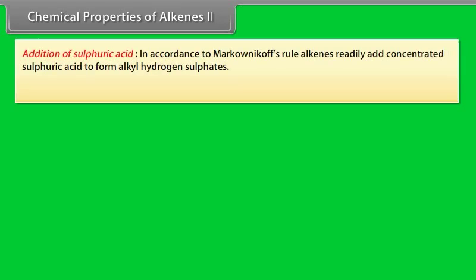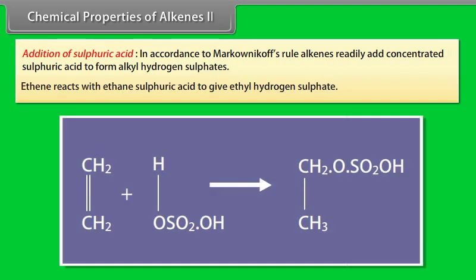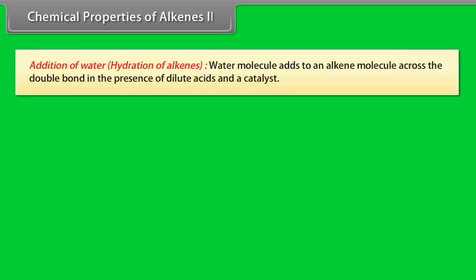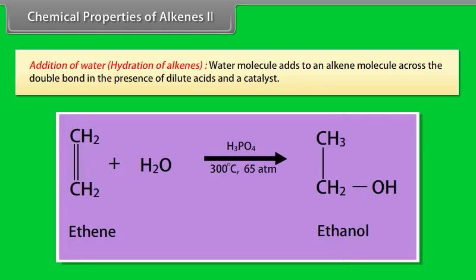Chemical properties of alkenes, Part 2. Addition of sulfuric acid: in accordance with Markovnikov's rule, alkenes readily add concentrated sulfuric acid to form alkyl hydrogen sulfates. For example, ethene reacts with sulfuric acid to give ethyl hydrogen sulfate. Addition of water — hydration of alkenes: water molecules add to an alkene molecule across the double bond in the presence of dilute acid and a catalyst. For example, ethene gives ethanol when a mixture of ethene and steam is passed over phosphoric acid and silica under 65 atmospheres pressure and at 300 degrees centigrade.